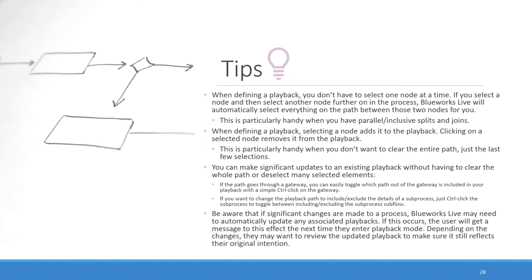You can make some updates to an existing playback without clearing the entire path. When a path goes through a gateway, you can easily change which path is taken out of the gateway by using Control+Click on the gateway to toggle between the various paths. Also, to include or exclude the path within a subprocess — not a linked process, but a subprocess — you just Control+Click the subprocess to toggle between excluding and including the subprocess subflow inside it. So you have easy control without having to reselect everything.